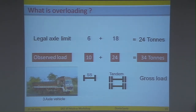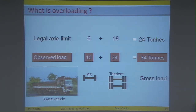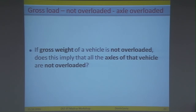Before the core analysis, let me explain overloading. This is a typical Indian truck with a steering axle and a tandem rear axle. The legal axle limit for each axle type and the gross load legal limit are shown. One observed load exceeds the legal limit — that is an overloaded truck. But if the gross vehicle weight is not overloaded, does that mean all axles are also not overloaded? No.